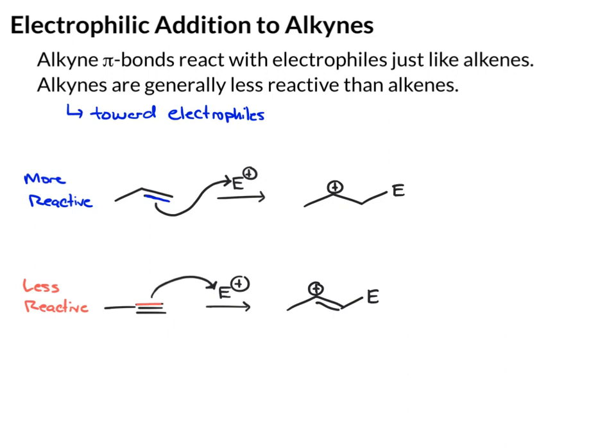If we compare these two carbocations, the one from the alkene is secondary. The one from the alkyne has the positive charge sitting directly on a double bond carbon — this is called a vinyl cation. Vinyl carbocations are very unstable and typically don't form. If you see a positive charge sitting directly on a double bond carbon, that should scream 'unstable' to you. The reason the alkyne is less reactive toward an electrophile is because it's not good to be forming this positive character on the double bond. The secondary cation isn't great, but it's much more stable than the vinyl cation.